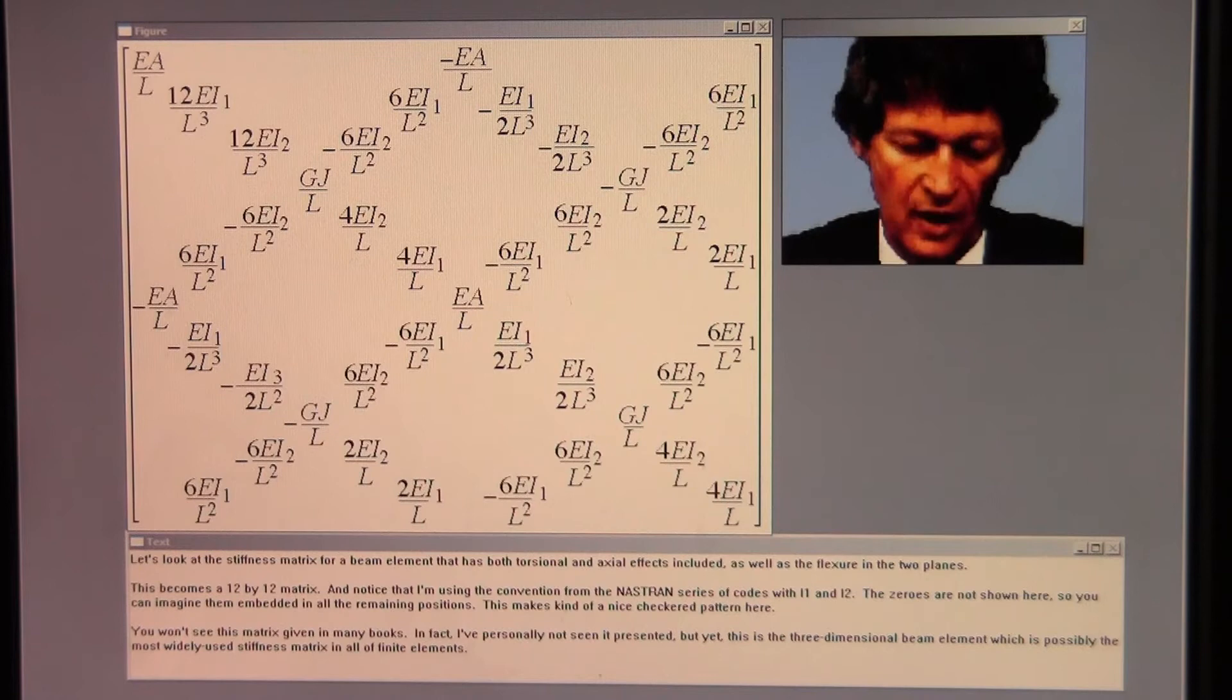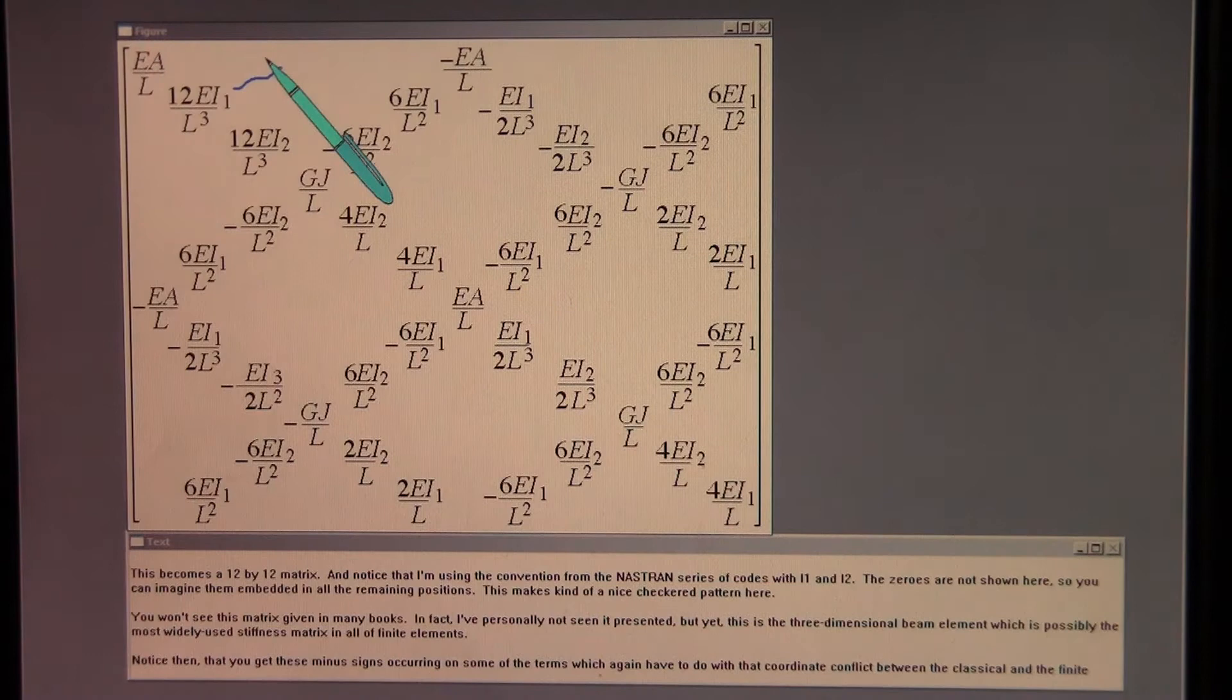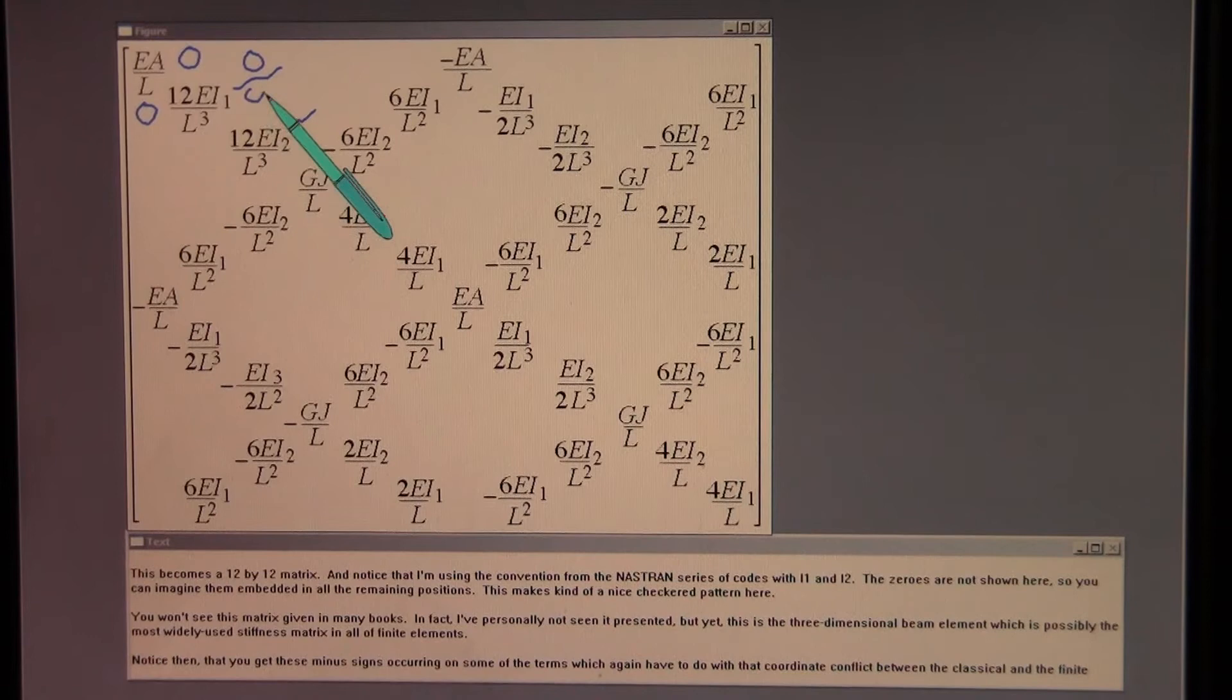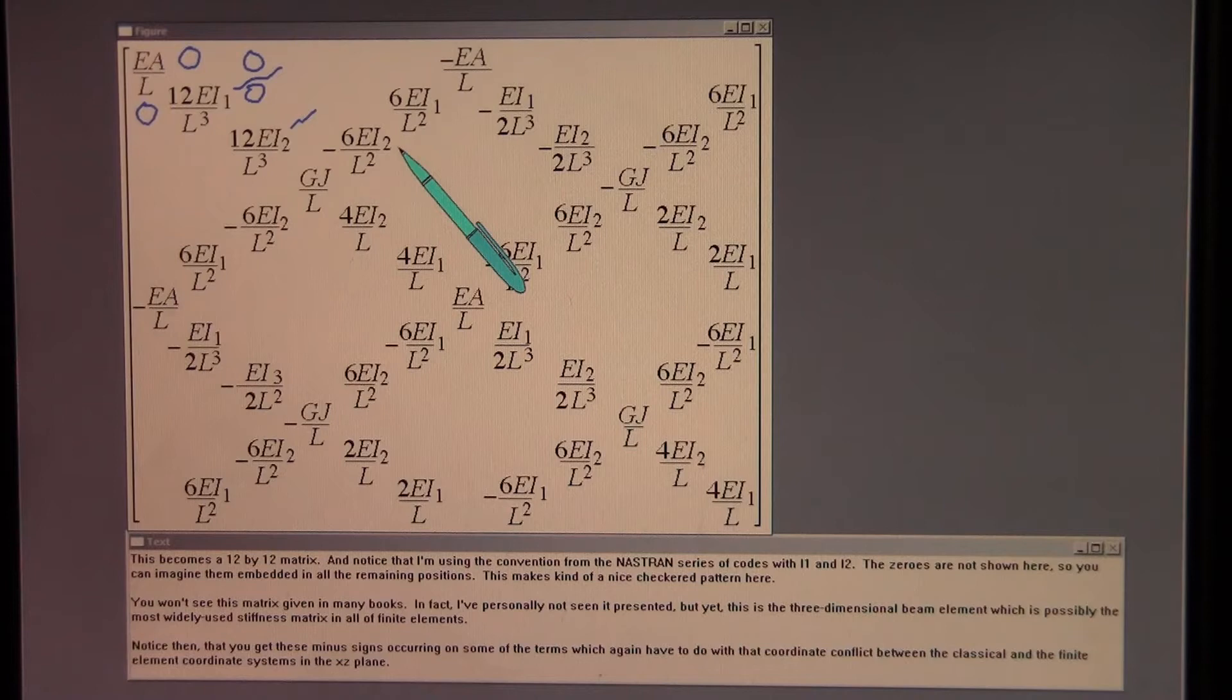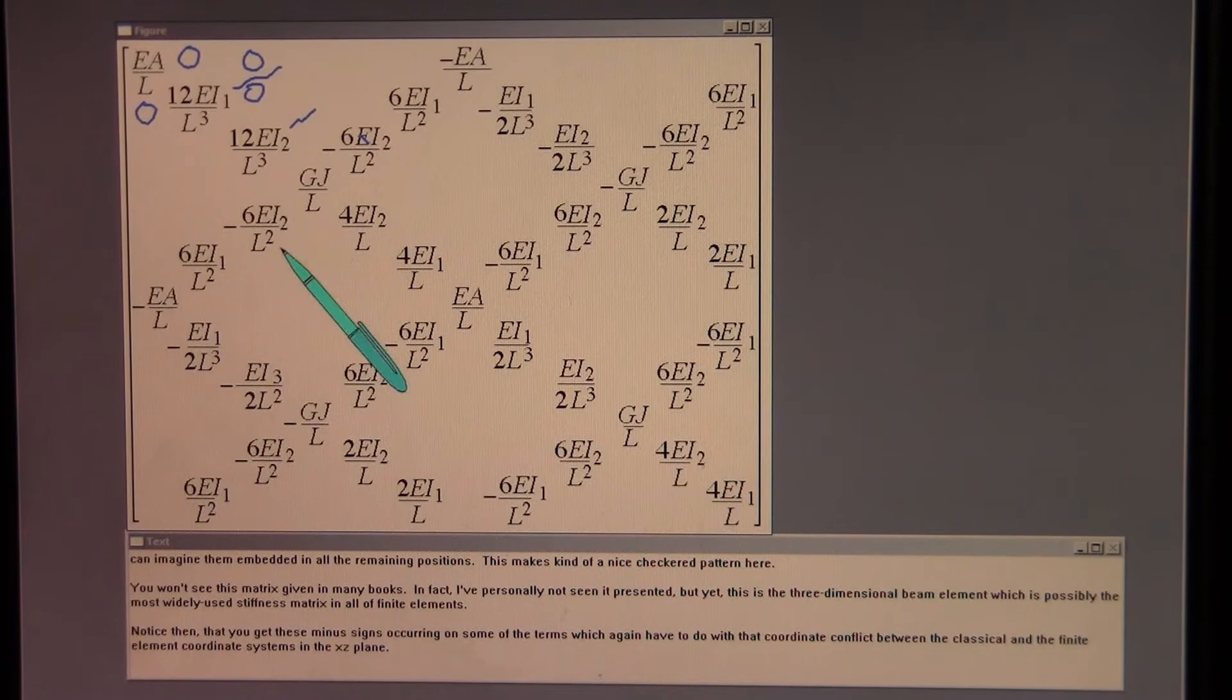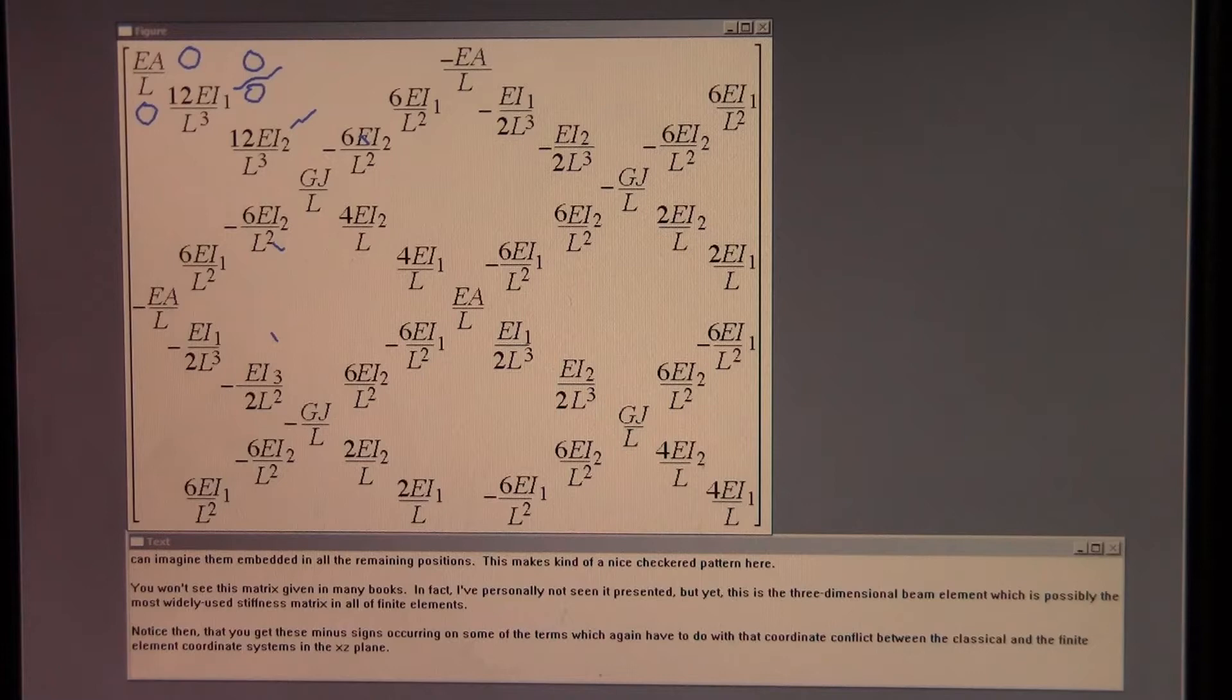Let's look at the stiffness matrix for a beam element that has both torsional and axial effects included as well as the flexure in the two planes. This becomes a 12 by 12 matrix and notice that I'm using the convention from the Nastran series of codes with I1 and I2. The zeros are not shown here so you can imagine them embedded in all the remaining positions. This makes kind of a nice checkered pattern here. You won't see this matrix given in many books. In fact I've personally not seen it presented. But yet this is the three dimensional beam element which is possibly the most widely used stiffness matrix in all of finite elements. And notice then that you get these minus signs occurring on some of the terms which again have to do with that coordinate conflict between the classical and the finite element coordinate systems in the XZ plane.